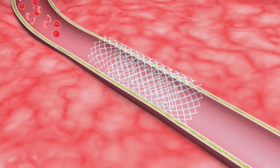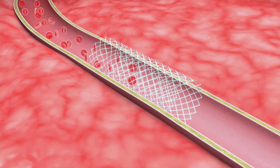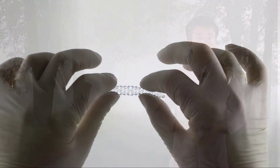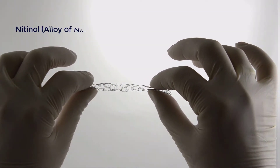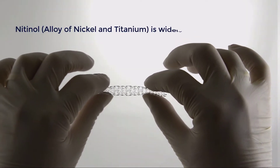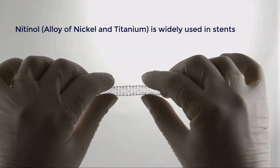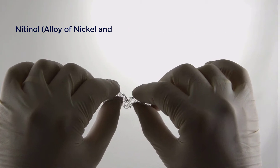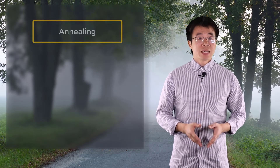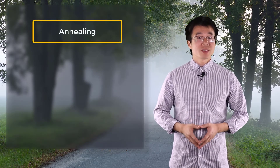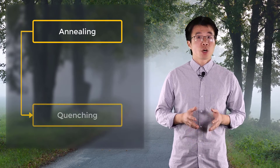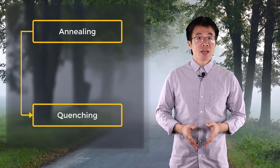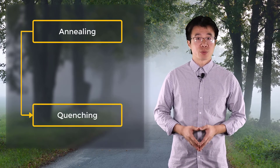Have you ever wondered how such delicate medical devices are manufactured? The commonly used material for stents is nitinol, a metal alloy of nickel and titanium. The stents go through annealing and quenching processes to obtain the required geometric and material characteristics.